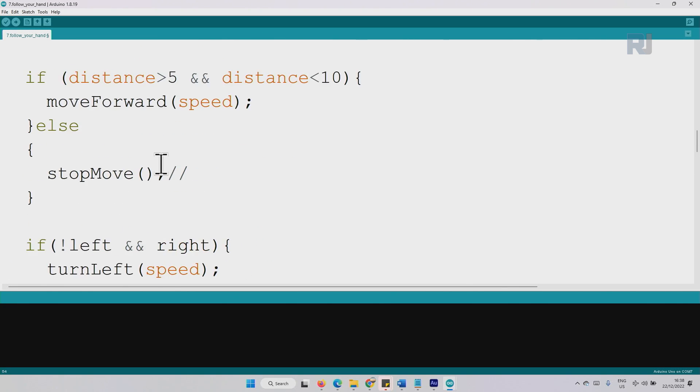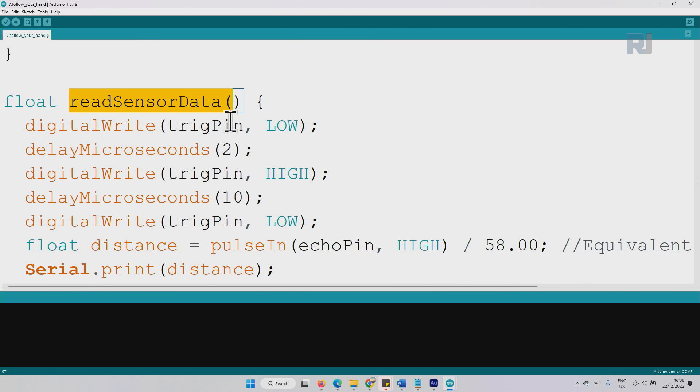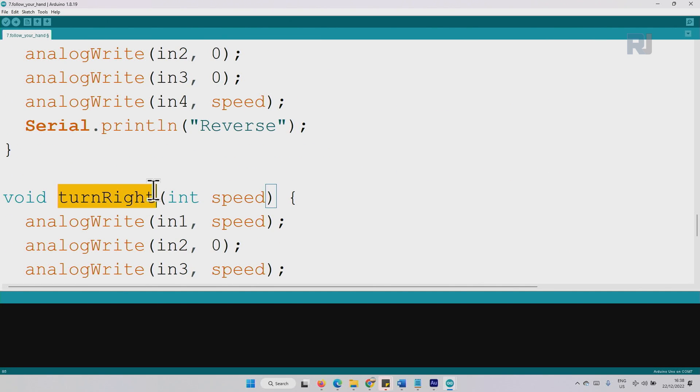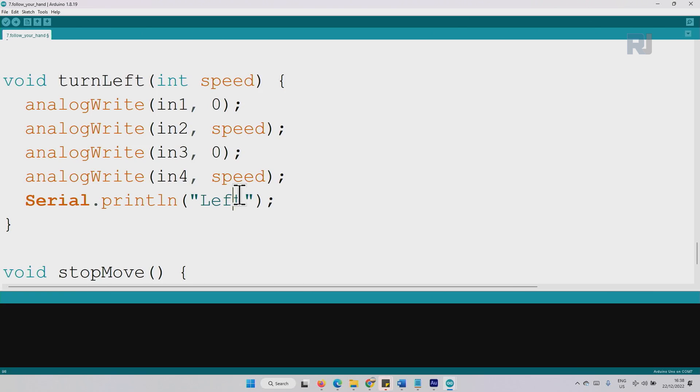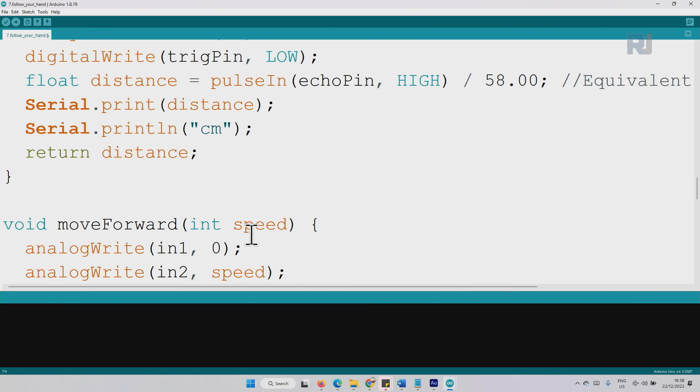This is the exact code as before, we don't need to even explain it because I have already explained this. This is for forward, backward, turn right, and turn left. In each function I have added the text: for example, for the stop it prints on the serial monitor stop, for the left it prints left, for the turn right it prints right, and for backward it prints reverse and for forward forward. Here I've added these two lines to print the distance.